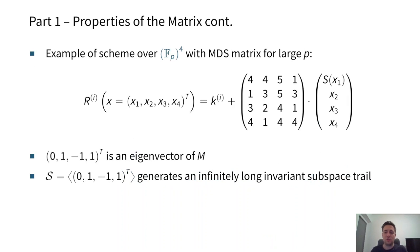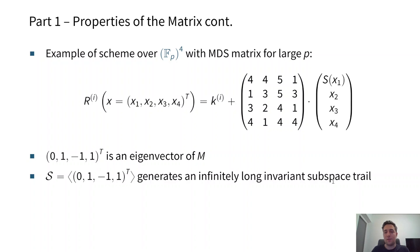With an example: we have the nonlinear layer where S-boxes apply only to the first word, working over a prime field. Given the nonlinear layer times some matrix M plus the round key, since this value is an eigenvector of M, the subspace generated by this eigenvector generates an infinitely long invariant subspace trail. It is very important that we have a zero at the first position, since it means the S-box doesn't change the result — it is not active.